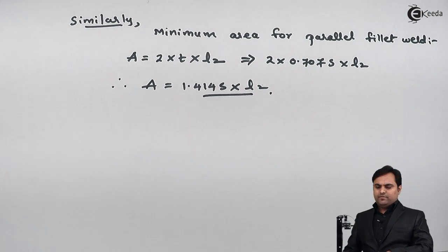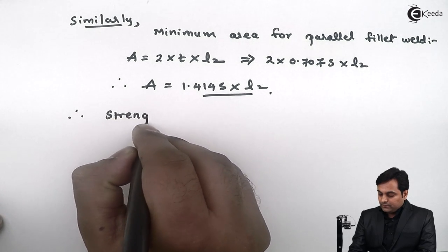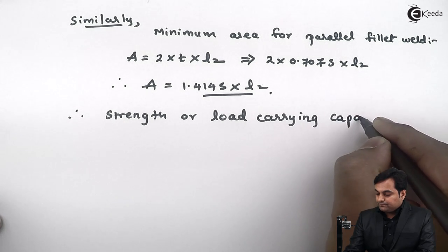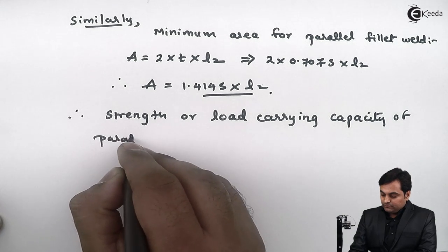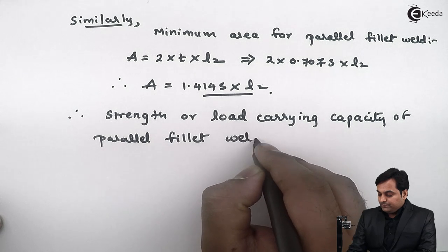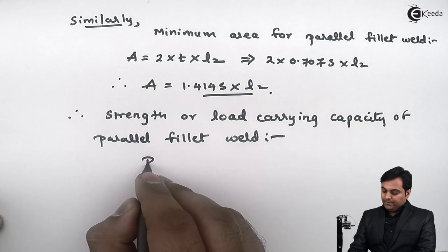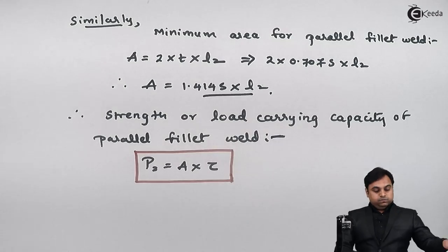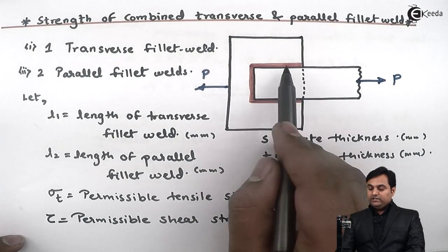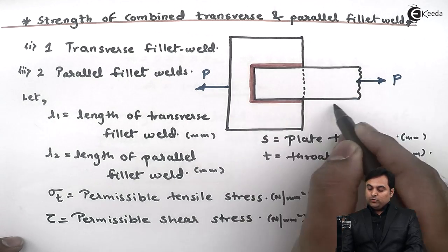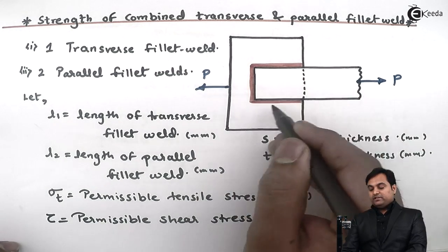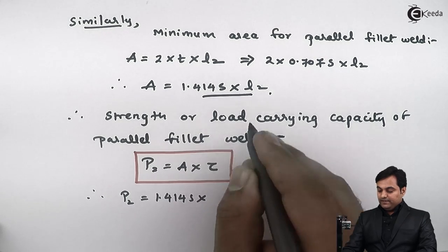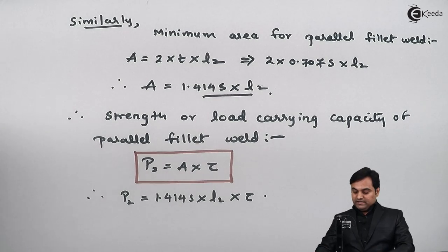Failure will always take place at this minimum area. The strength or load-carrying capacity of the parallel fillet weld is denoted P2 and equals area multiplied by shear stress tau, because the parallel fillet welds run along the direction of the load and are subjected to shear. Therefore P2 equals 1.414·S·L2·tau. This is equation number 2.